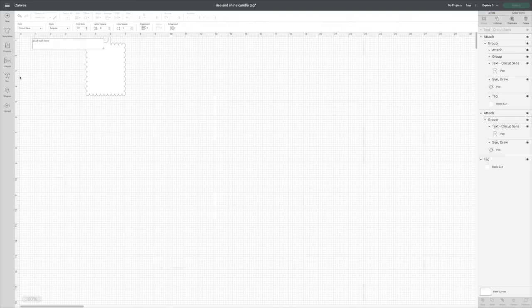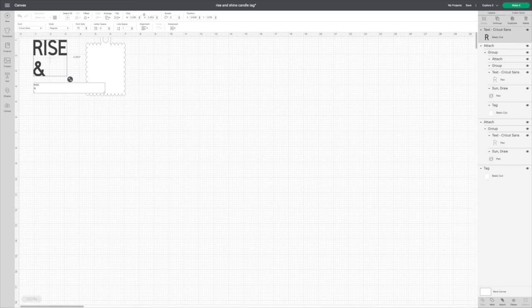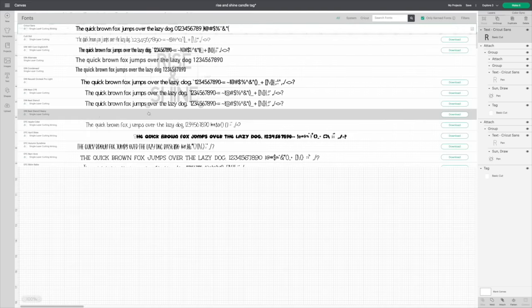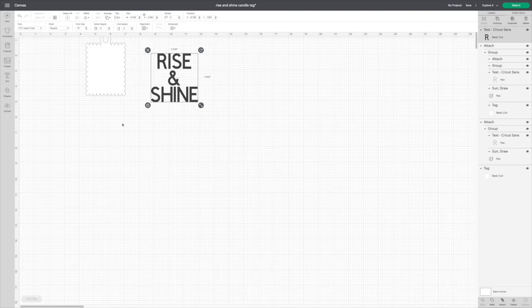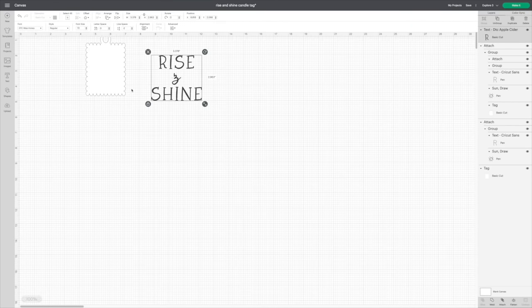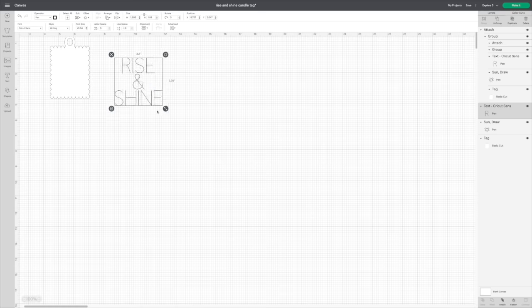Now for the text. I wanted to type the words rise and shine, so I typed those out, centered them, and pulled the line spacing in so that the words weren't so far apart. Then I went through all the fonts and picked a font that I liked. Now the main thing here is that I made sure that this font wasn't going to be cut out but it was going to be written with the pen, so I needed to make sure that I had draw selected for my font, and that's just at the top left corner, and I set that on top of my tag.